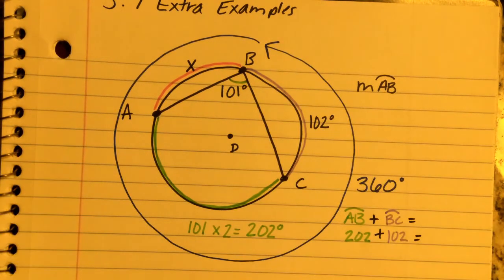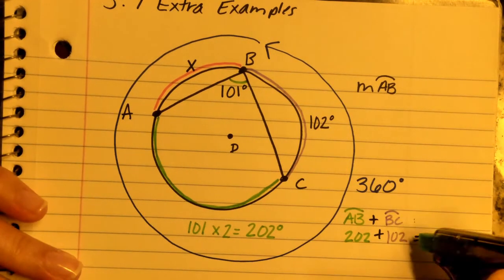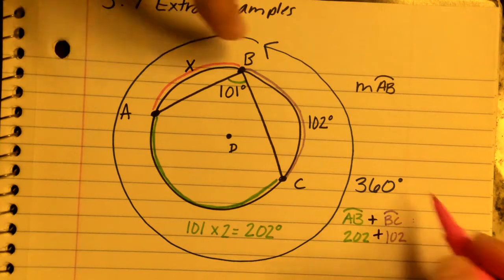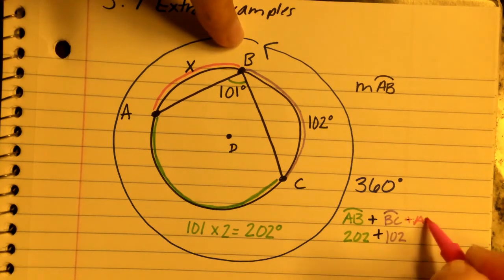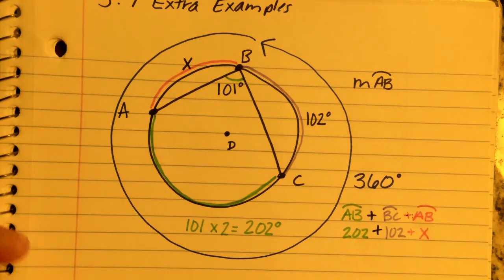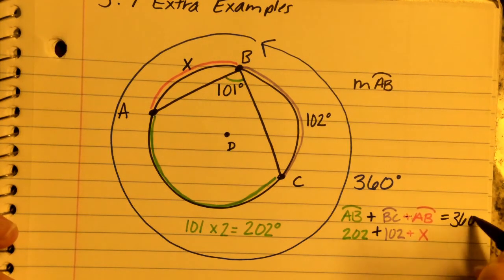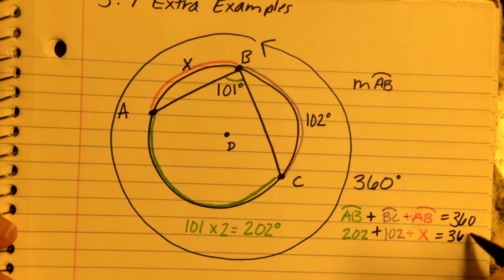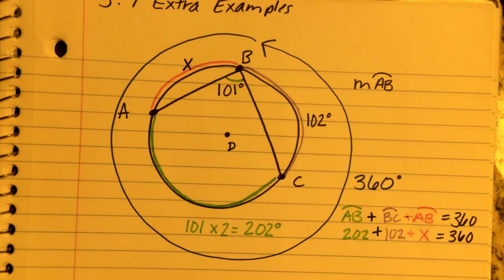Sorry, not equal - we add arc AB as well. So now we have all three. This one is X, we don't know what it is. They all equal 360 degrees, the total measurement around the circle. So we take 102 plus 202, add them together, and combine our like terms.